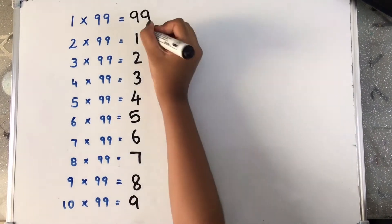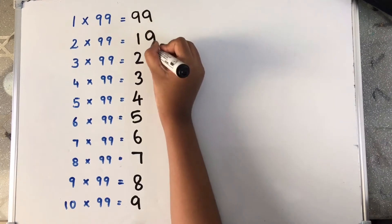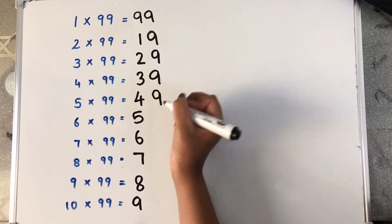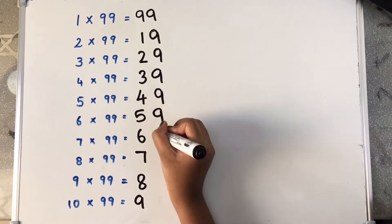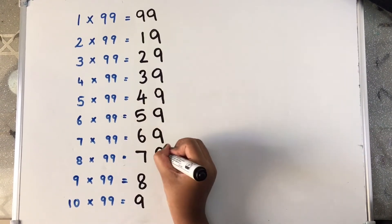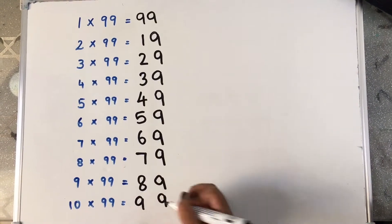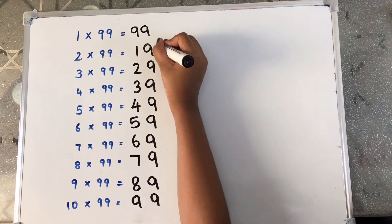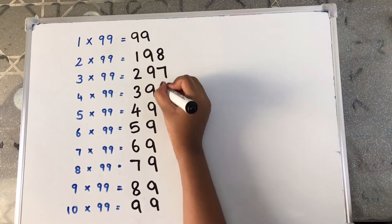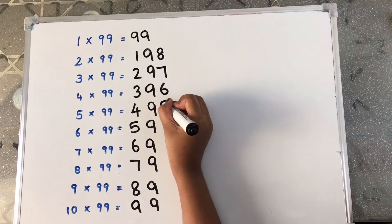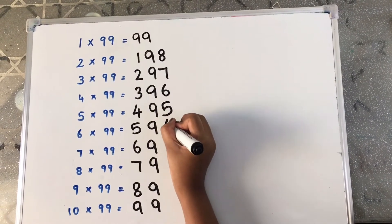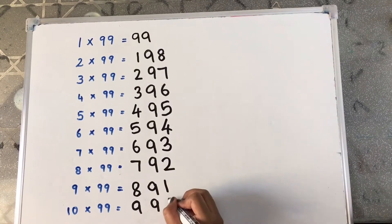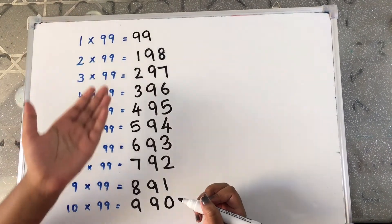Now, we have to write 9 in all: 9, 9, 9, 9, 9, 9, 9, 9. Now, we are going to write the reverse number from 8: 8, 7, 6, 5, 4, 3, 2, 1, 0. This is the answer for the 99 table.